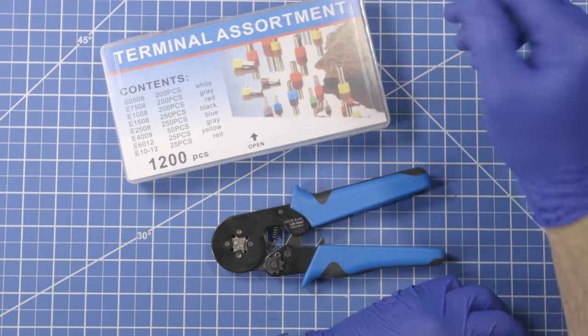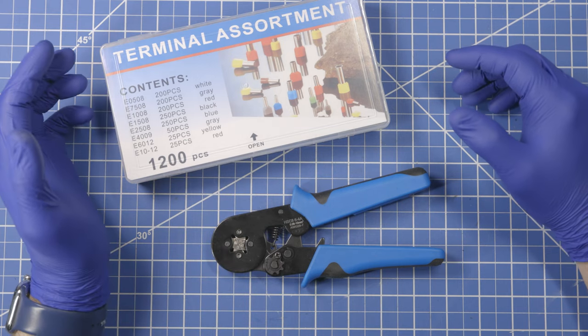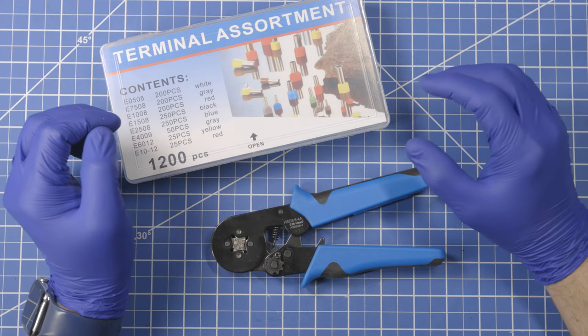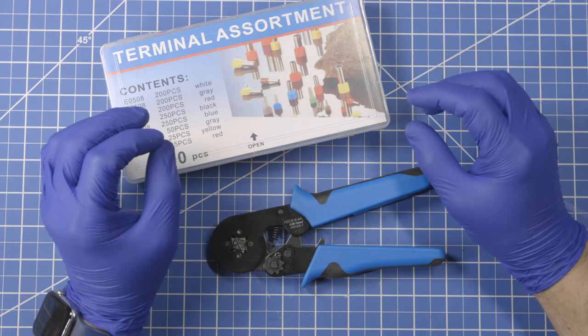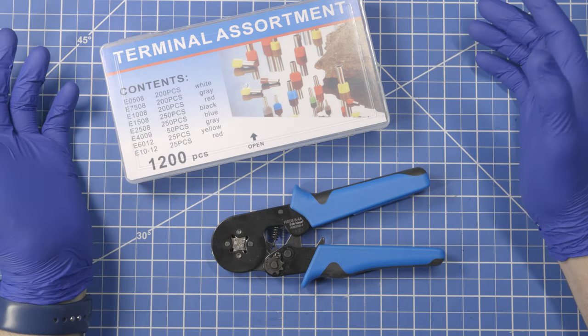Now, they're called terminals in this pack, but they're ferrules. And what these are is little ends to add to wires. They're like shoelace ends, but for wires.